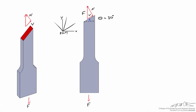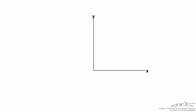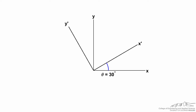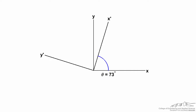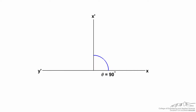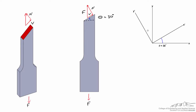There's nothing preventing us from drawing axes in other directions or rotating them further. For example, starting with the original x and y axes, we can rotate by theta — 30 degrees counterclockwise. There's nothing special about 30 degrees; we could keep rotating until theta equals 90 degrees, at which point the x-prime axis is what used to be the y axis — a full 90-degree counterclockwise rotation. Introducing notation: sigma_y equals the normal force divided by the original cross-sectional area A times B, where A is the width and B is the depth into the screen.